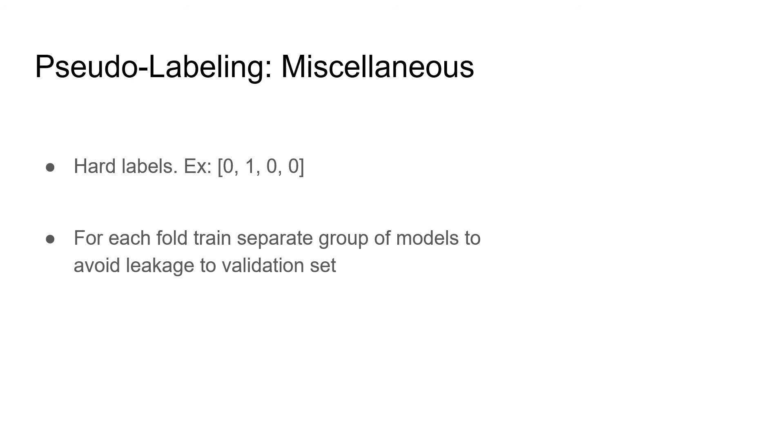Here are other minor details of our pseudo-labels training. Firstly, we used hard labels, which is simply an argmax over the predictions. We wanted to try training on soft-labels, which are raw softmax logits from the model, but we didn't have time for experiments. Secondly, no ensembling over different folds is allowed, since this would lead to leakage, and our validation scheme would be compromised. Finally, models were trained from scratch each time, instead of fine-tuning previously trained models, to avoid bias propagation that could be introduced by those models.